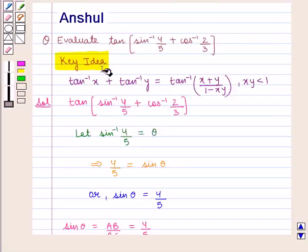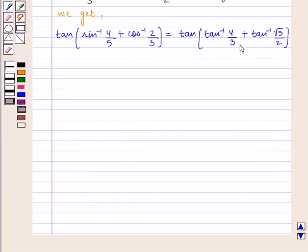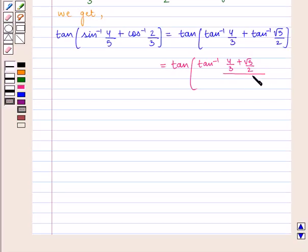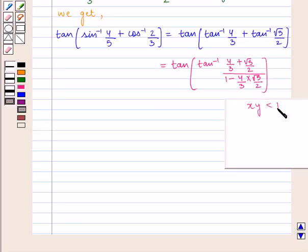Using the key idea, tan inverse of x plus tan inverse of y equals tan inverse of x plus y upon 1 minus xy, provided x times y is less than 1. Here we assume 4 by 3 as x and square root of 5 by 2 as y. We can write tan of tan inverse of 4 by 3 plus square root of 5 by 2, upon 1 minus 4 by 3 into square root of 5 by 2. We verify that x times y, that is 2 times square root of 5 by 3, is less than 1, which is true.